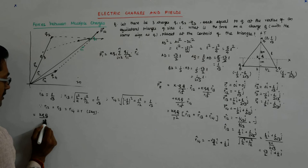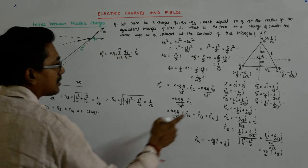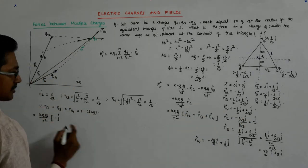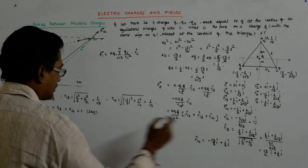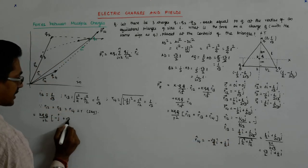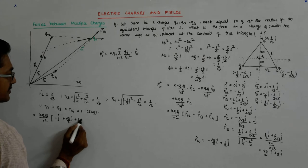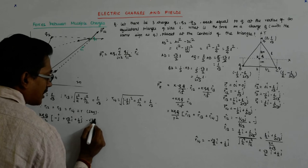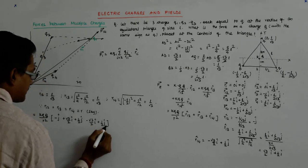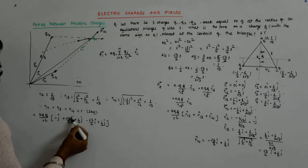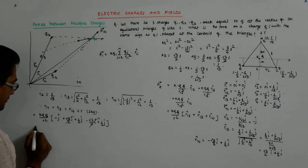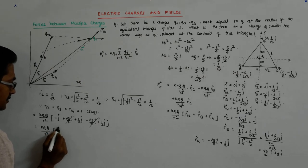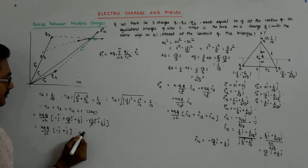KQQ upon R square, R12 is what? R12 cap is minus j. This is R13 is what? Plus root 3 by 2 i cap plus half j cap. What is this? Minus root 3 by 2 i cap plus half j cap. This cancels this. Half j cap plus half j cap becomes j cap.